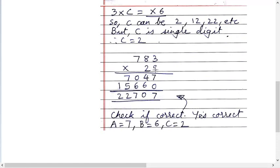You check it personally whether you are getting this answer is correct. I have checked it. That's why I know it is correct. And the answers are A equals to 7, B equals to 6 and C equals to 2. Right?